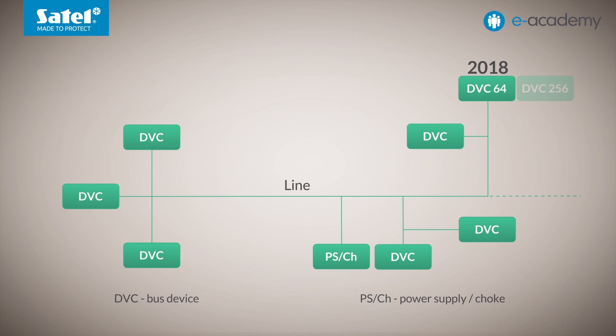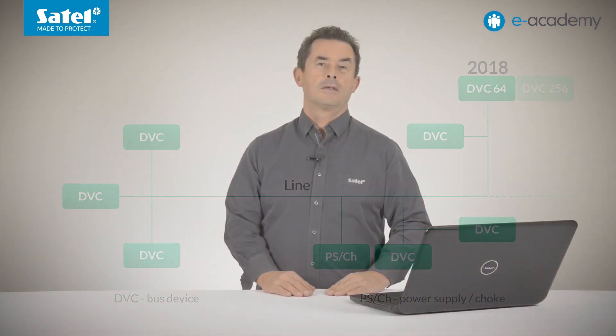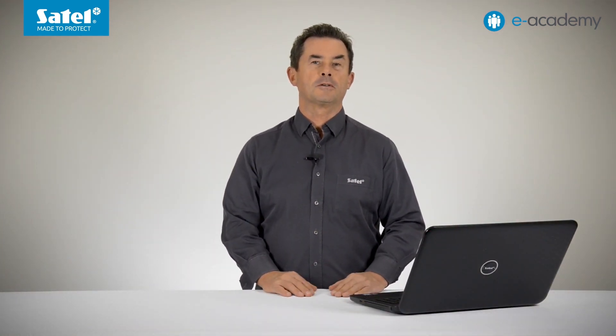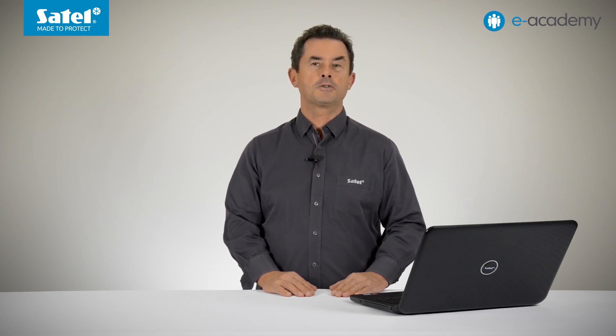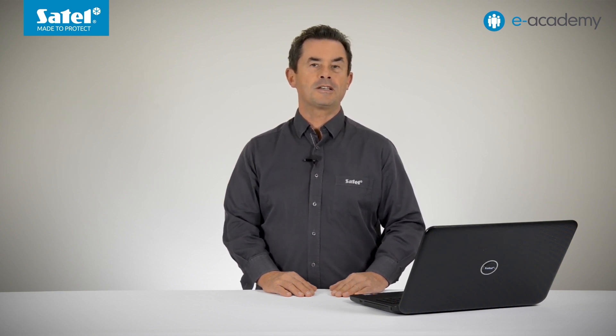At that time, the main line segment could be extended by three more segments. The line repeaters had to be subtracted from the total number of devices in the line, and of course additional power supplies had to be added there too. So this is what it was like until 2018. As I said a moment ago, currently 256 bus devices can operate in one line.